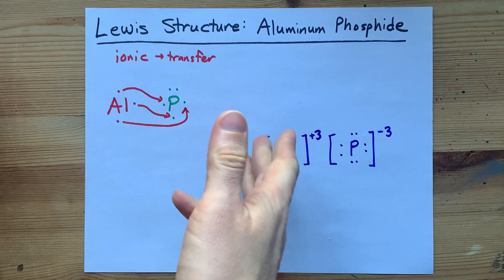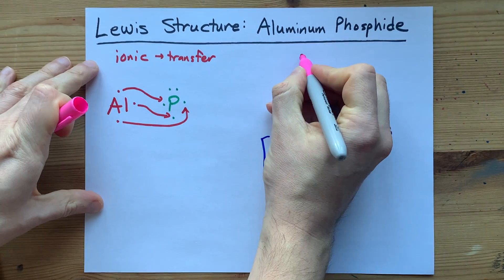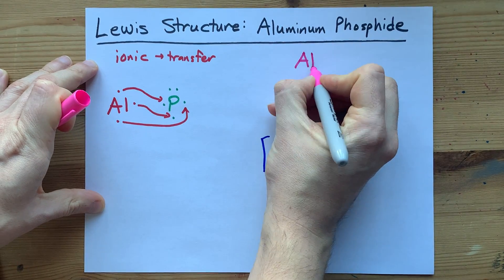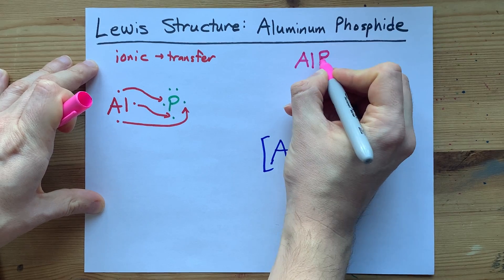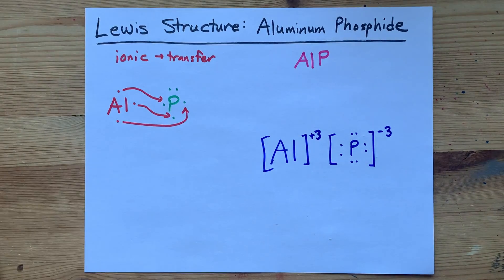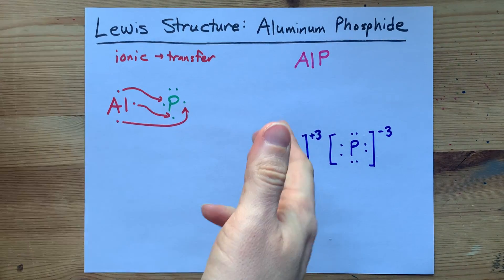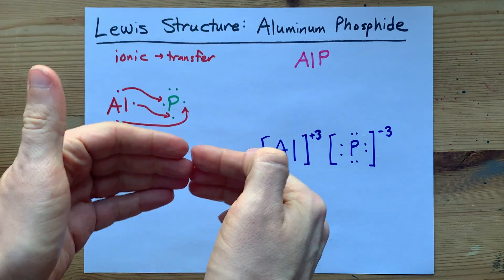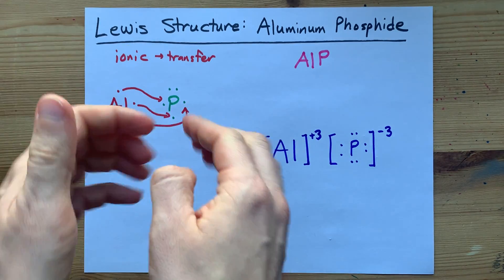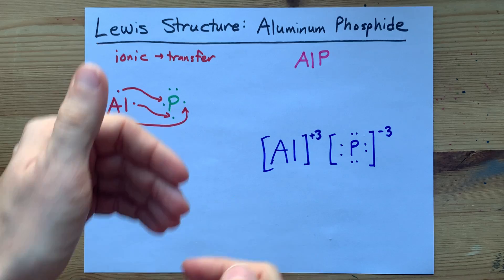Perfection. It may not be a surprise that the chemical formula for aluminum phosphide is AlP. One aluminum and one phosphorus is all you need in order to make the amount of electrons both given away and accepted the same.